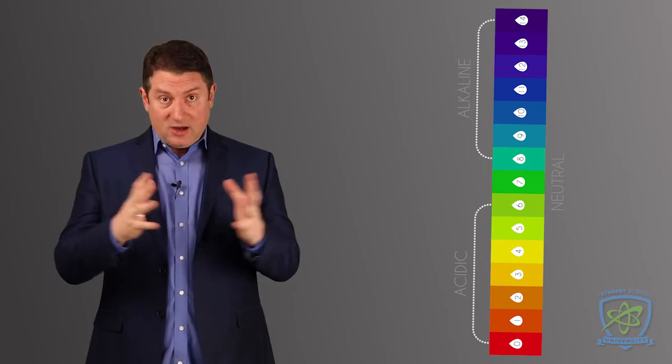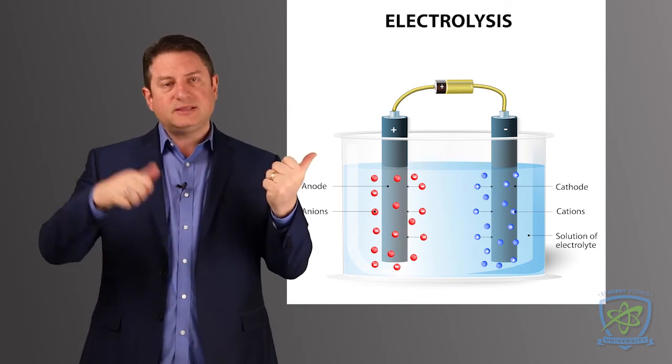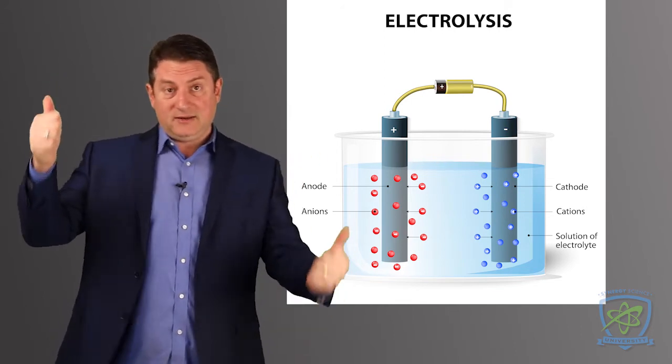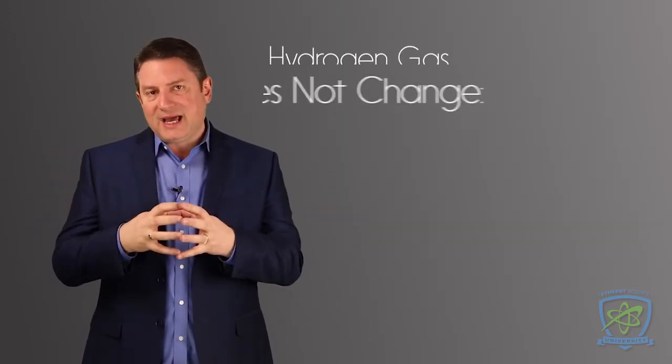This is how you change pH in water: by changing the water molecules, H2O, to H+ and OH-. That's how you affect pH on both sides of the pH chart.